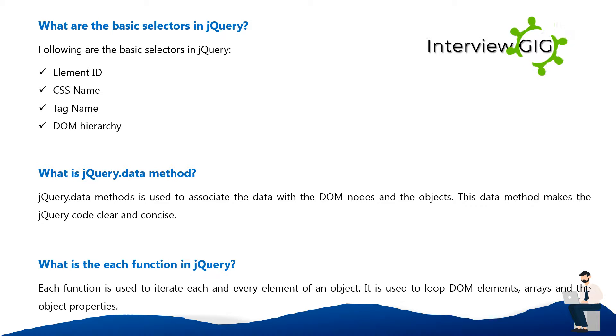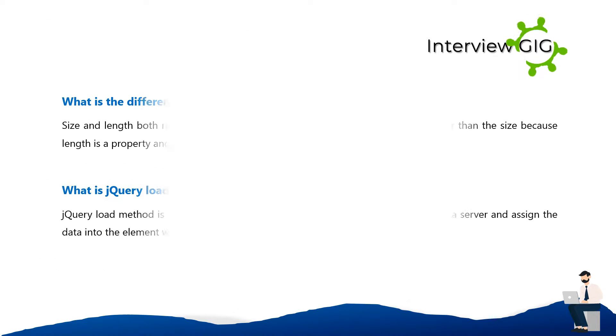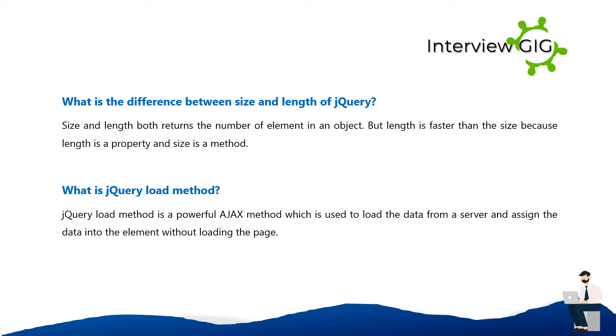What is the each() function in jQuery? The each() function is used to iterate through each and every element of an object. It is used to loop through DOM elements, arrays, and object properties.